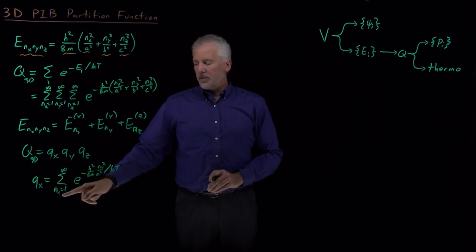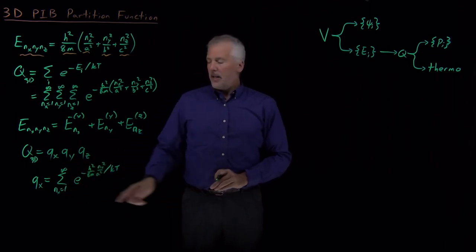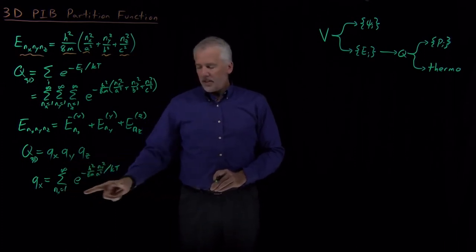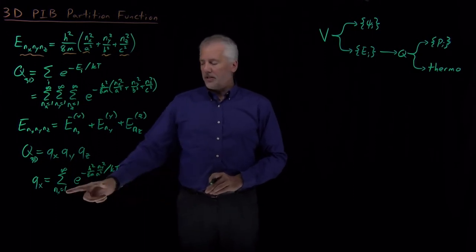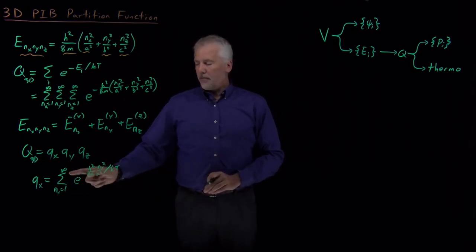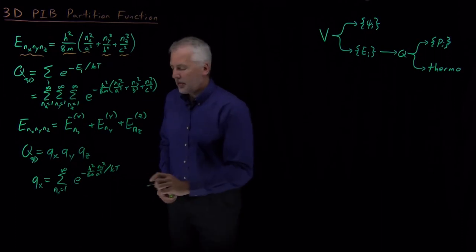Sum that for every possible state, n sub x is one running through infinity. That sum, still an infinite number of terms in that sum, but that's only a single sum, that gives us qx.